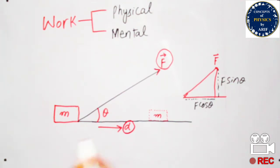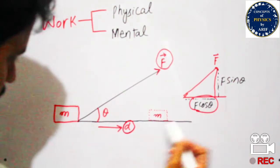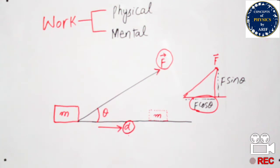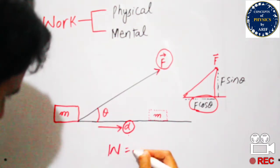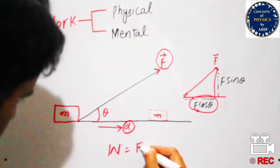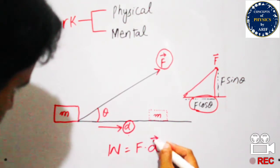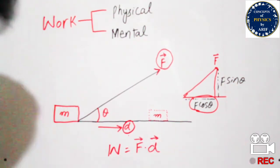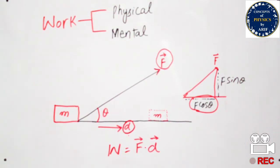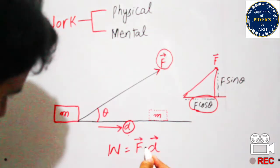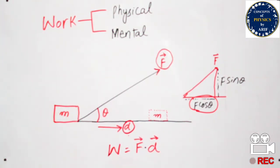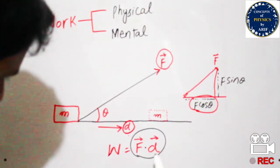We need to consider the force component which is parallel to the displacement. Work done by a force is the scalar product of force and displacement. Force is a vector quantity and displacement is also a vector quantity, but the scalar product of two vector quantities becomes a scalar quantity, so work is a scalar quantity.